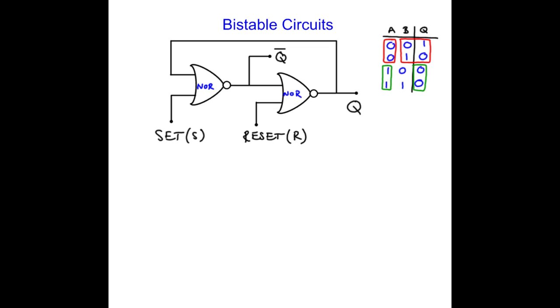So what we're going to do now is draw a table of all the different possible permutations. So we've got set, reset, q, and q bar. I'm going to use different colors to represent the different combinations. We'll start off with blue and we're going to make set 0 and reset 0 and see what happens.